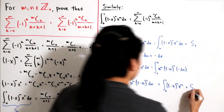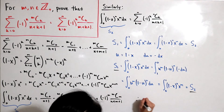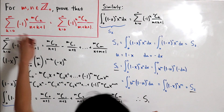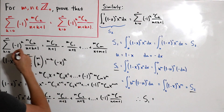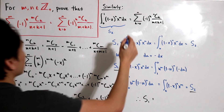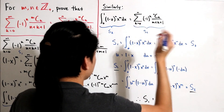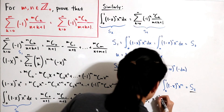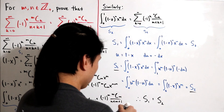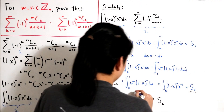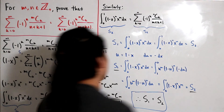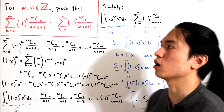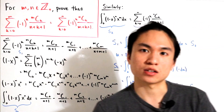Therefore S1 = S2, and the proof is complete. We've shown that the two partial sums are equal by expressing each as an integral, then using a simple u-substitution to show the integrals are identical. This is a pretty fun result — using integration to prove a combinatorics identity is a nice technique worth knowing.